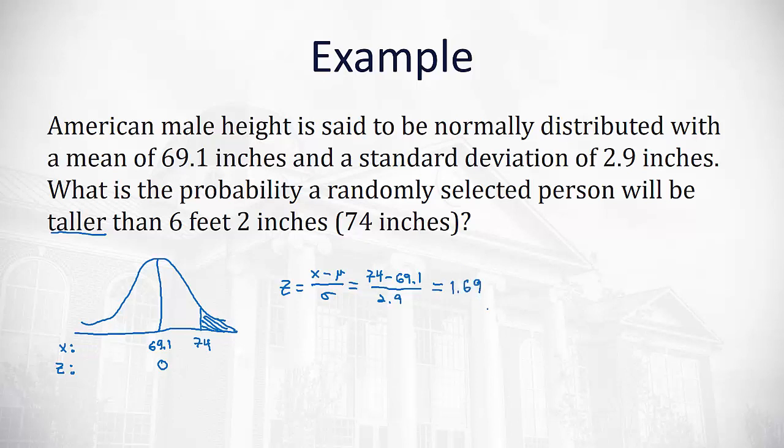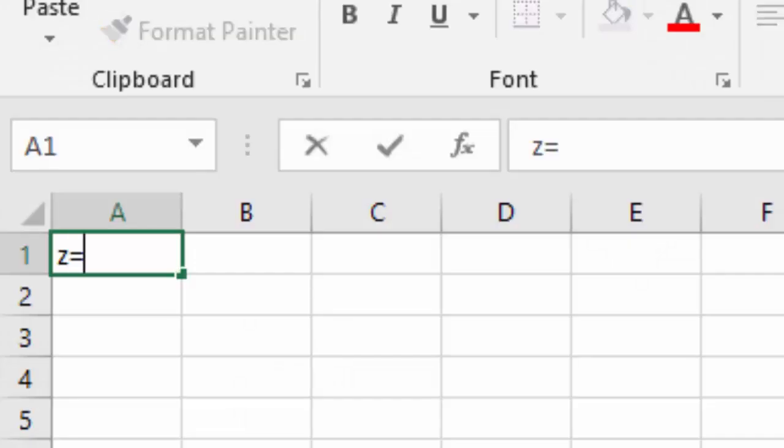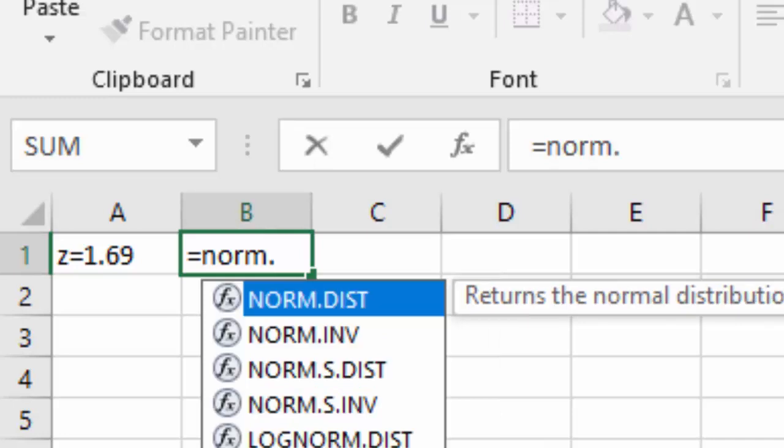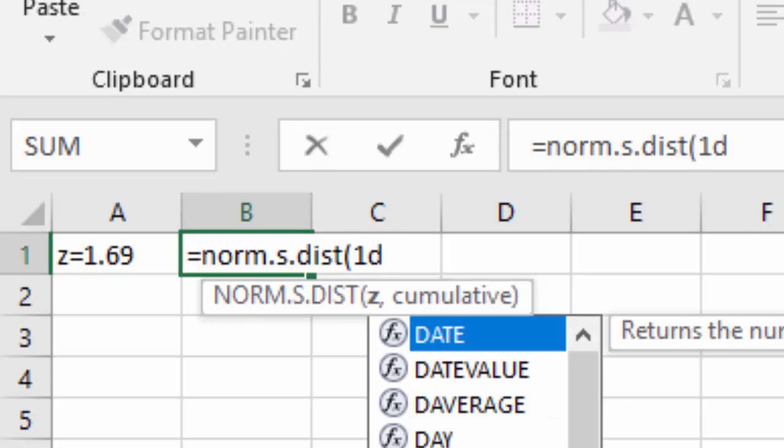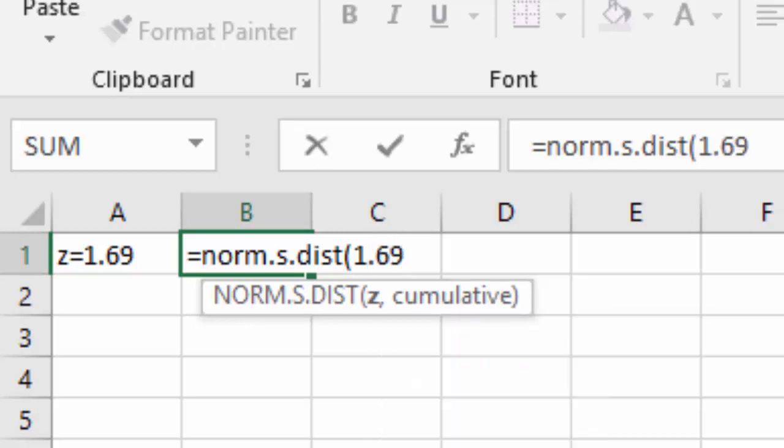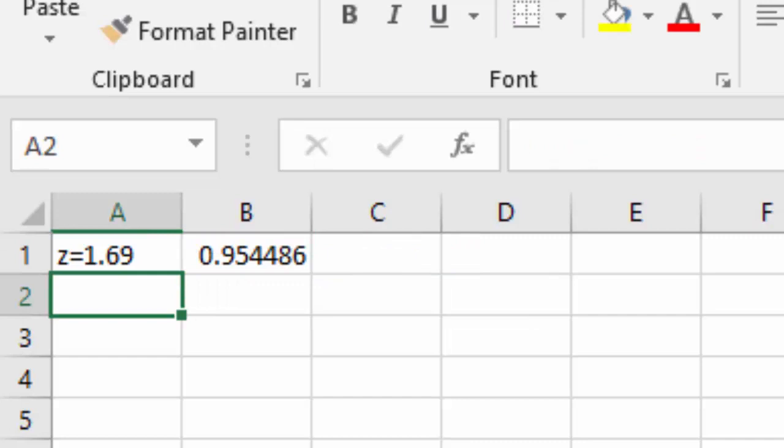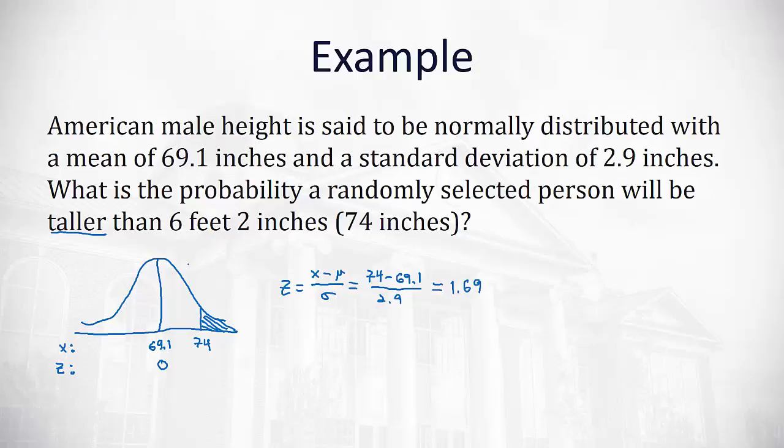From here, I can go to Excel to calculate what 1.69 gives me for an area. If z is equal to 1.69, we can type in equals norm dot s, for standard, dot distribution, and use that 1.69 for our z, and we always say true. And I find that's going to give me an area of 0.9545, so 0.9545 is the area we're talking about.